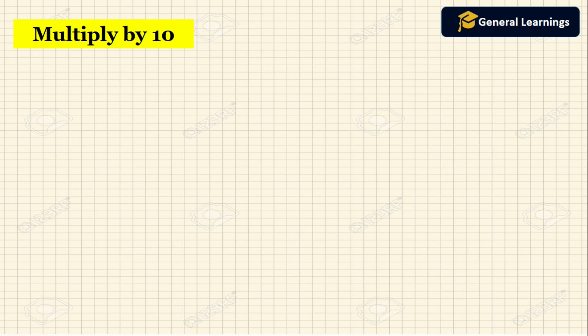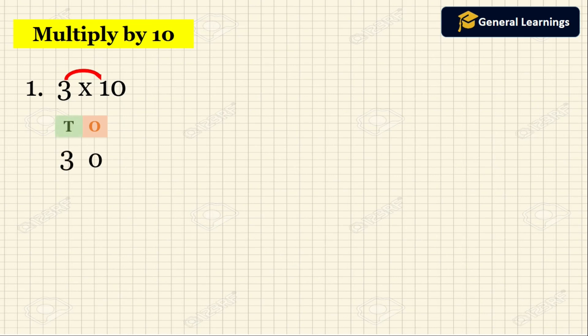First we are going to see multiply by 10. Let us take one example. They have given 3 into 10. So 10 has one zero. When we multiply a number by 10 we write one zero to the right of the number, that is in the ones place. Then multiply the remaining number by 1. Three into one — three ones are three — so that should be written in the tens place. So the answer is 3 into 10 equal to 30.